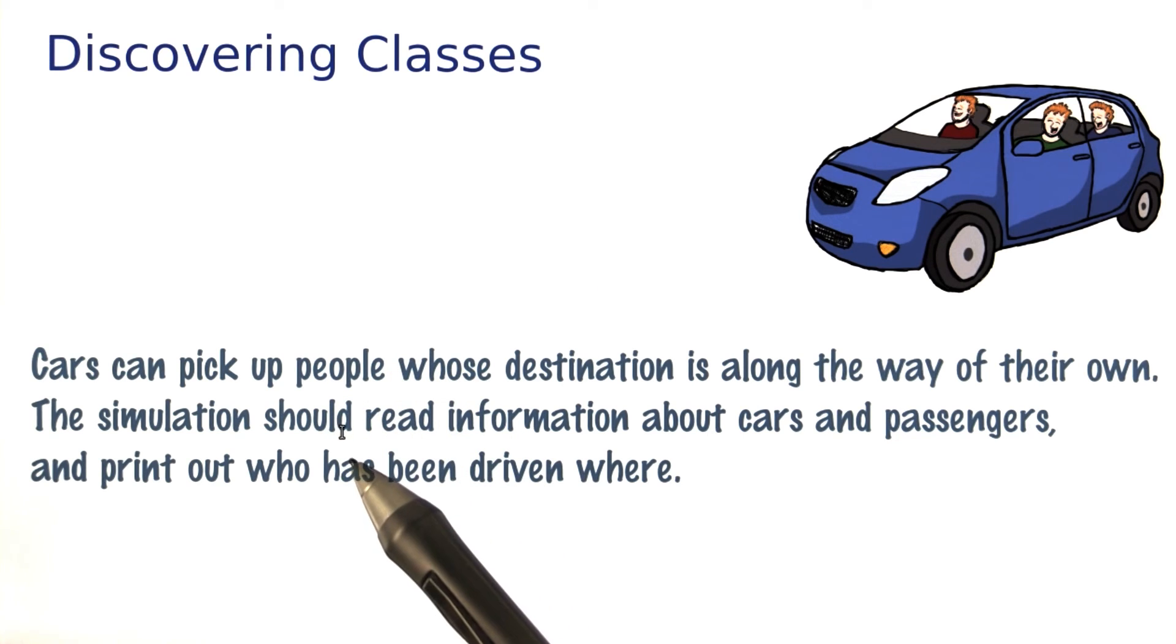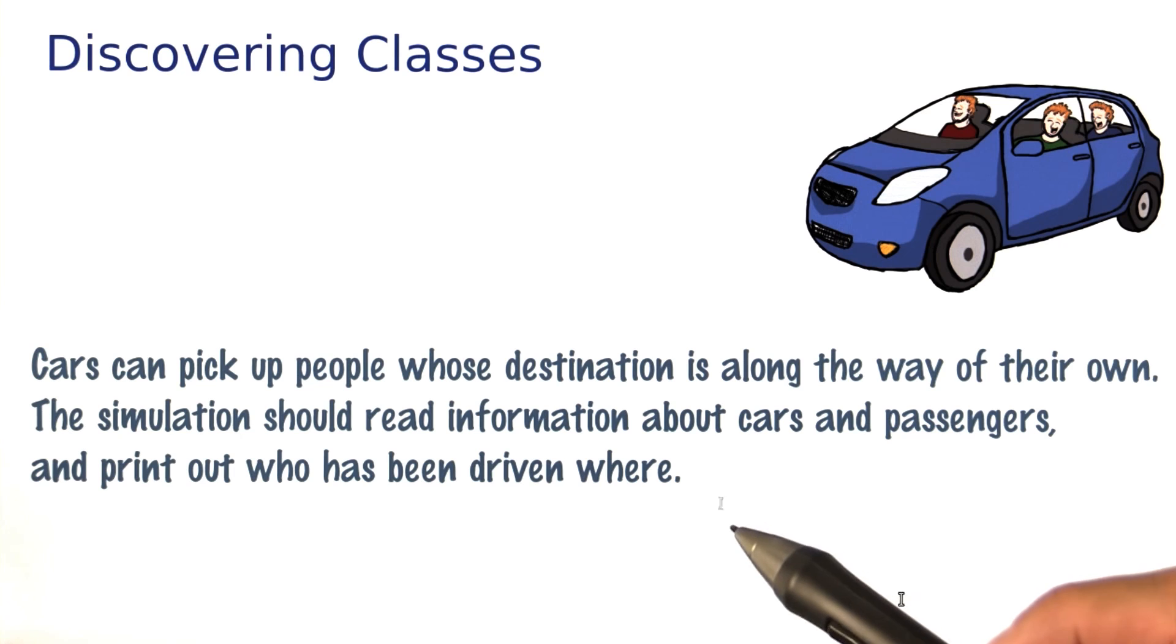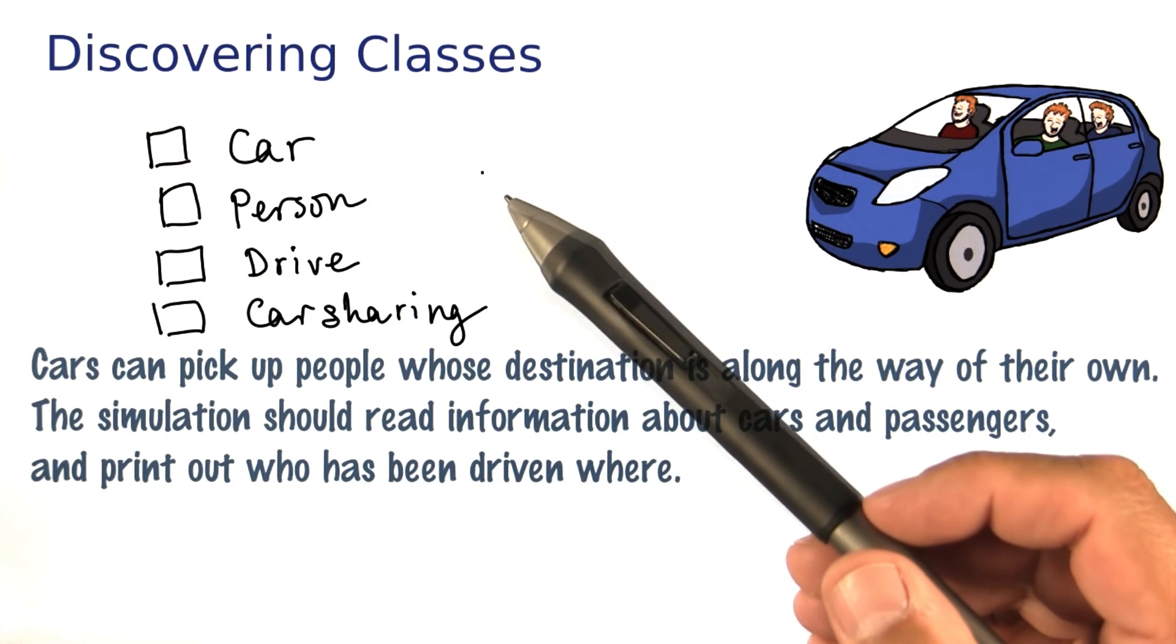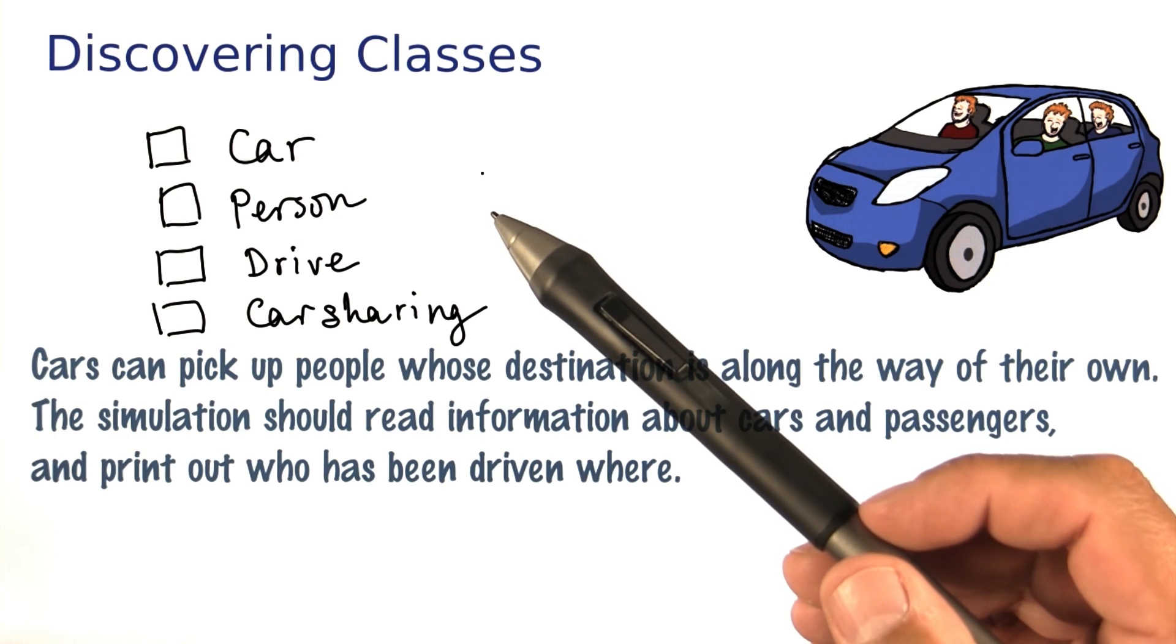So cars can pick up people whose destination is along the way of their own. The simulation should read information about cars and passengers and print out who has been driven where. What I'd like you to do is to read through this description and tell me what might make some good classes to implement a program that does this car sharing simulation. Let me give you a few choices. Which of these do you think would work out? Check all that apply.